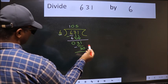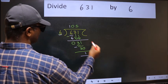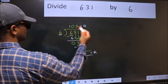No more numbers to bring down. So we stop here. This is our remainder and this is our quotient.